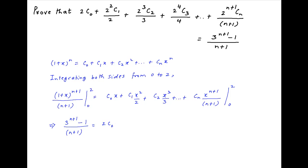And the right-hand side is equal to 2 times c0 plus 2 squared times c1 upon 2 plus 2 cubed times c2 upon 3 plus and so on.